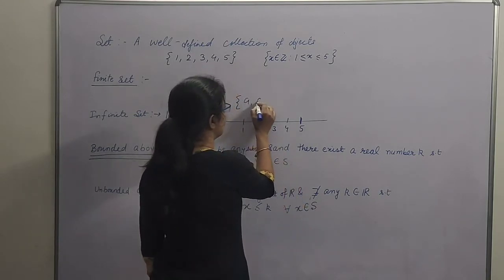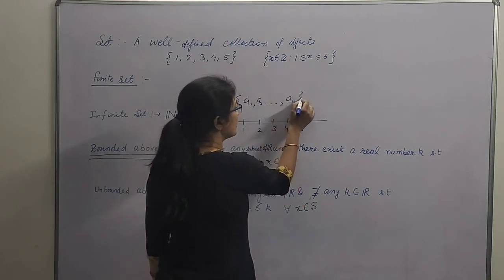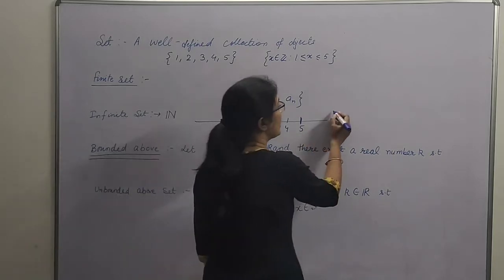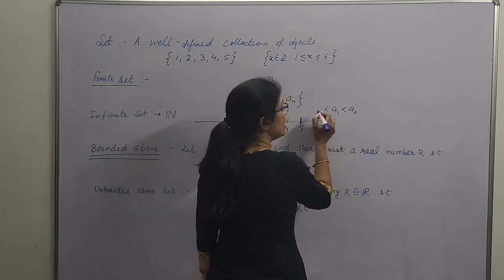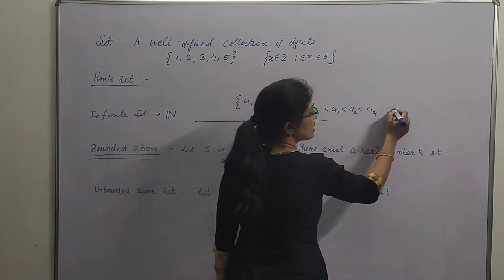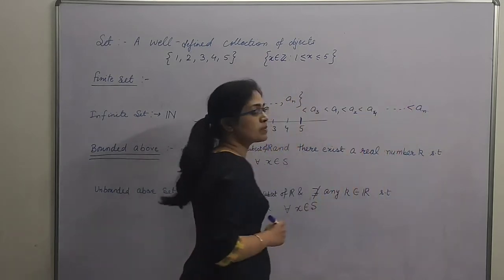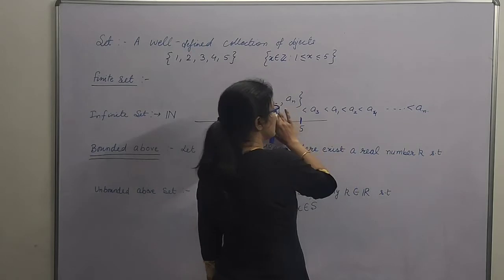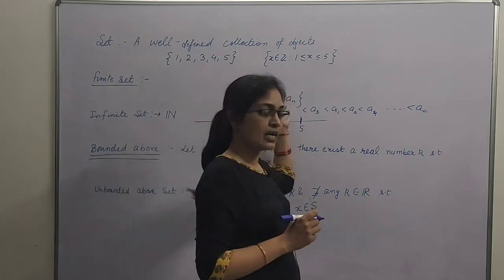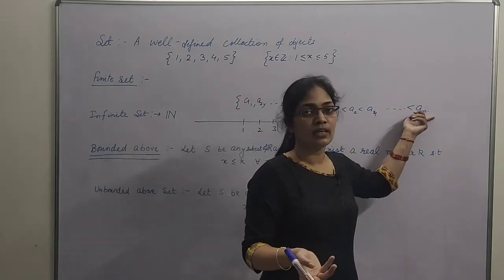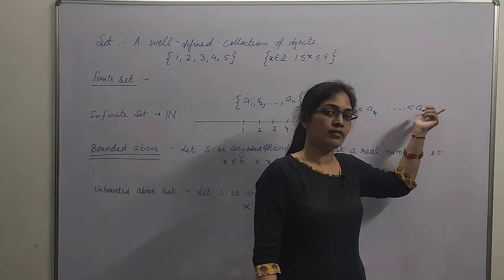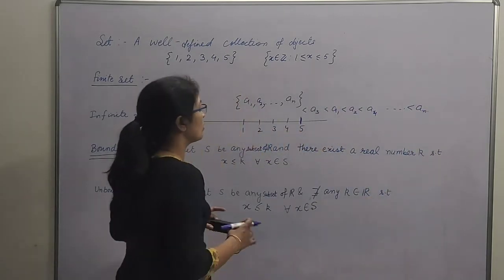Kyo? Koi bhi aapne finite set liya — subset toh real numbers ka hi hai na — n elements le di hain. Ye sare elements real numbers hi hain, so hum real numbers mein ordering kar sakte hain. Aise karte-karte aap kuch na kuch ek number in sets mein se aisa zaroor aayega jo sabse bada hoga. Suppose an sabse bada hai. So all elements of this set are less than an or equal to an, so an will act as upper bound. Therefore, every finite set is always bounded above.